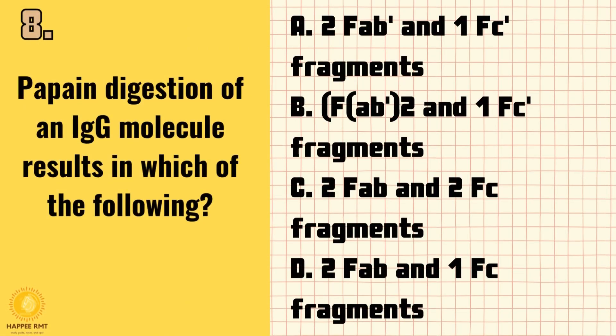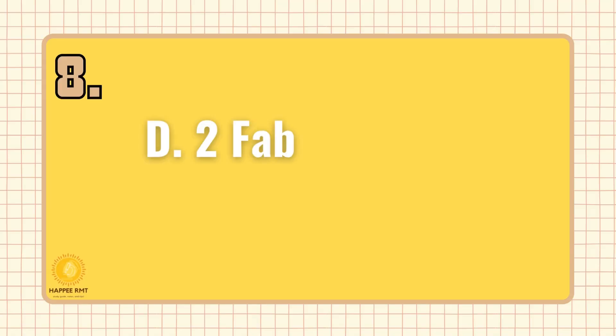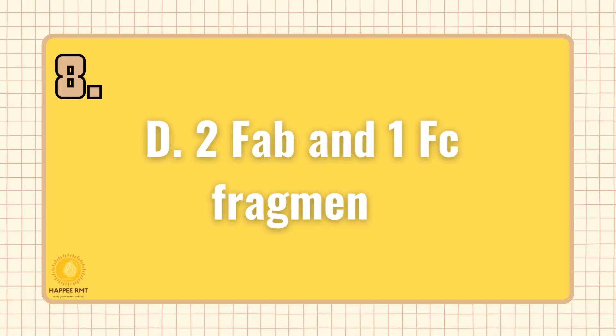Number 8. Papain digestion of an IgG molecule results in which of the following? A. 2 Fab' and 1 Fc' fragments. B. Fab'2 and 1 Fc' fragments. C. 2 Fab and 2 Fc fragments. D. 2 Fab and 1 Fc fragments. Answer is D: 2 Fab and 1 Fc fragments.